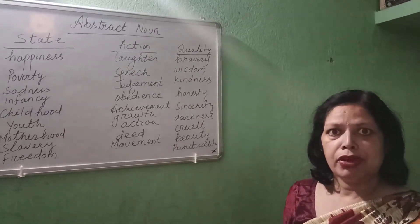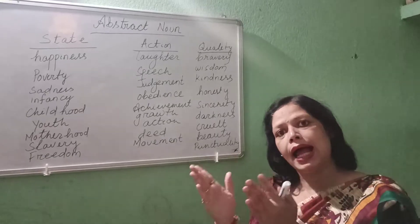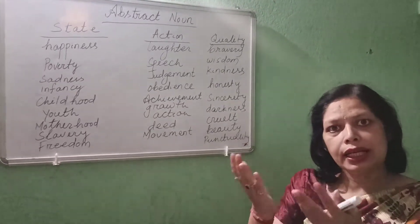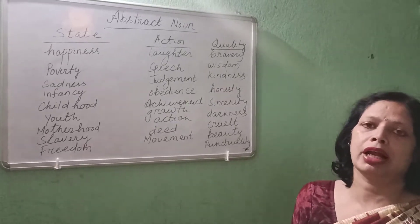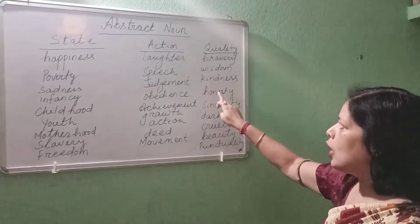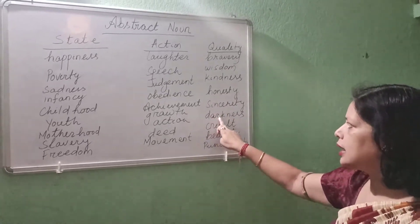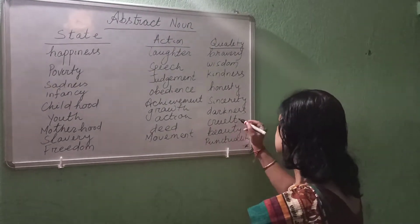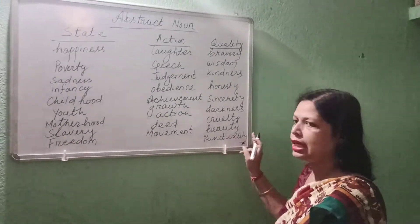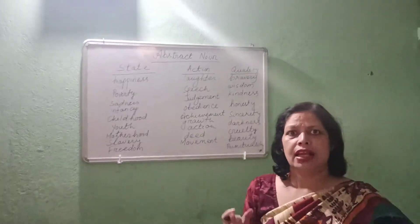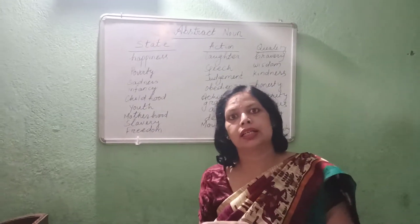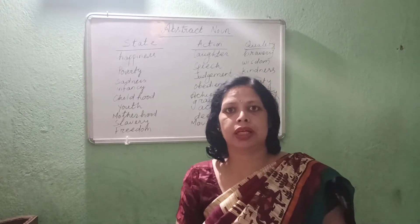These are the things about the quality of a person. It can come from an adjective. For example, you are an honest man — honesty is your quality. Quality of a person or trait of a person can be qualified under the quality category of Abstract Noun. Bravery, wise — wisdom, kind — kindness, honest — honesty, sincere — sincerity, dark — darkness, cruel — cruelty, beautiful — beauty, punctual — punctuality. N number of qualities are there, like cleverness and cleanliness. These are the things which state your quality — when you convert an adjective into an Abstract Noun, it comes under quality.